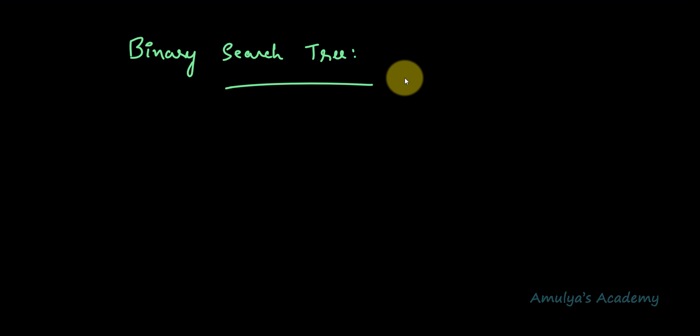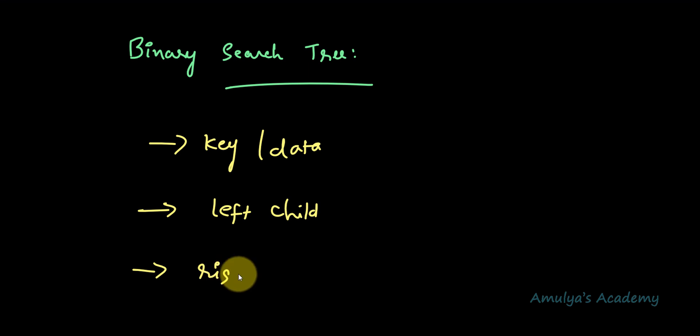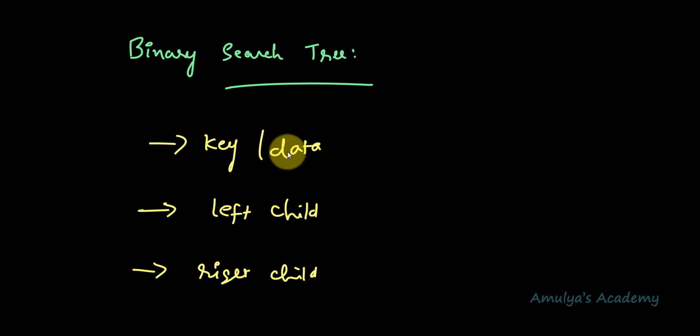Here we want to implement a tree, specifically a binary search tree. A tree is a collection of nodes, and every node of a binary search tree contains three parts: the first part is the key or data or value, the second part is the left child, and the third part is the right child. While writing the program, we are using class and object concept, so every node of the tree will be an object.